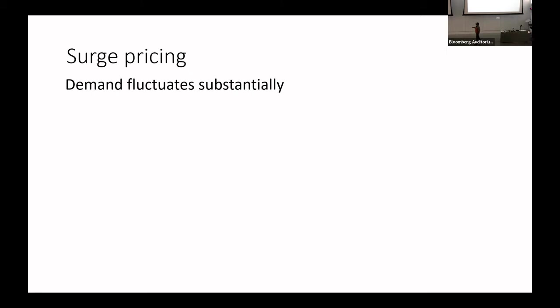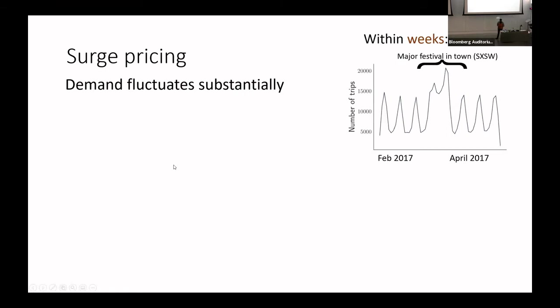Each of these spikes is like the weekly pattern where Ride Austin sees far more traffic on the weekends than on the weekdays — each spike is like Friday through Saturday night, then it dies down during the week. It triples in traffic over the weekend.